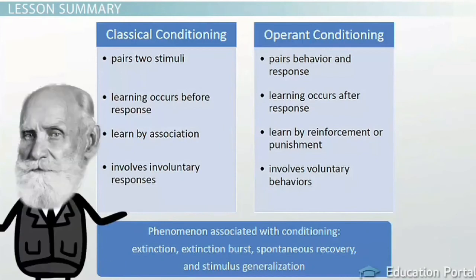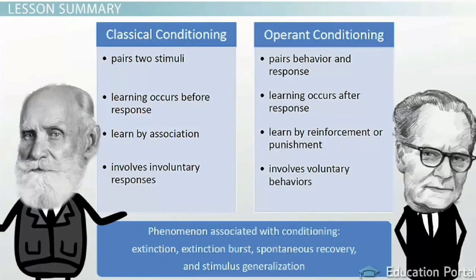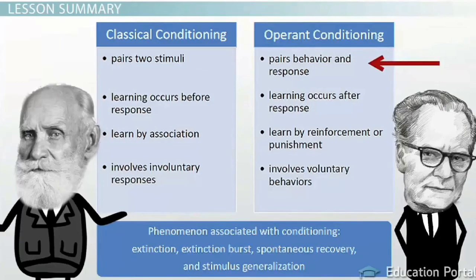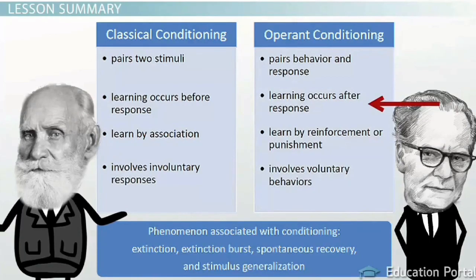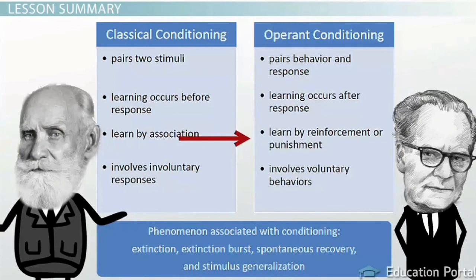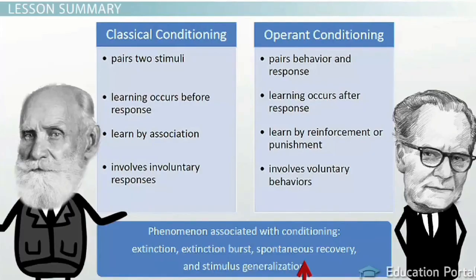In review, let's compare Pavlov's classical conditioning and Skinner's operant conditioning. Both are processes that lead to learning. Classical conditioning pairs two stimuli, while operant conditioning pairs behavior and response. Learning occurs before the response in classical conditioning and after the response in operant conditioning. You learn by association in classical conditioning and by reinforcement or punishment in operant conditioning. Classical conditioning always works with involuntary responses, while operant conditioning works with voluntary behaviors. Extinction, extinction burst, spontaneous recovery, and stimulus generalization are different phenomena that can occur in behavioral conditioning.